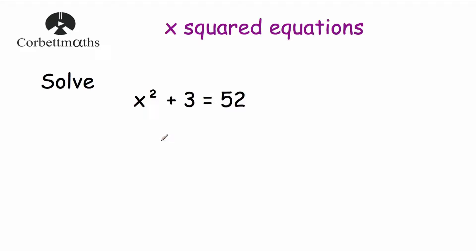So when solving this equation, we want to get rid of the plus 3 first, then deal with the x squared. Let's take away 3 from both sides: x squared plus 3 minus 3 leaves us with x squared, and on the right hand side 52 minus 3 equals 49. So we now have x squared equals 49.